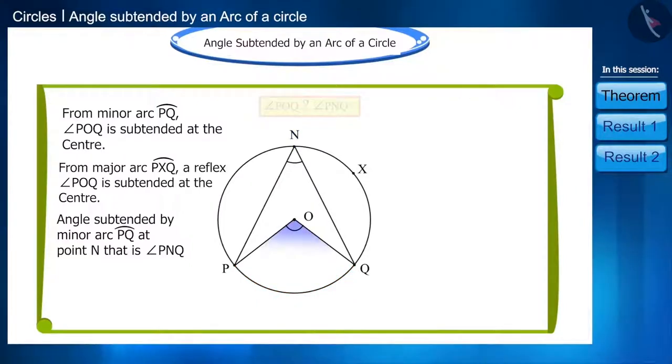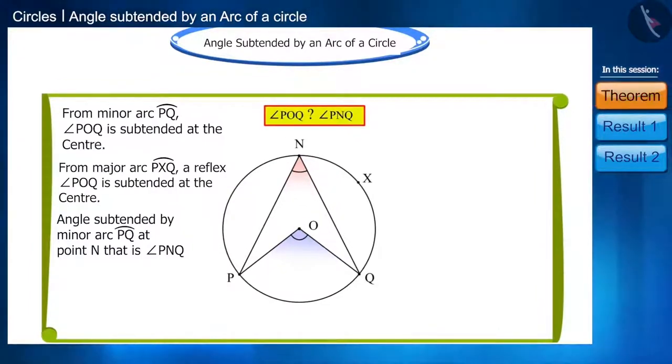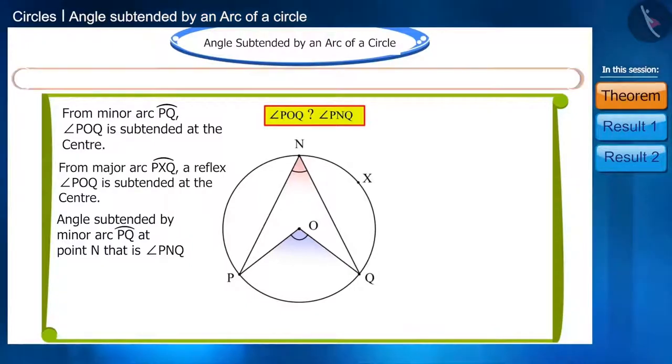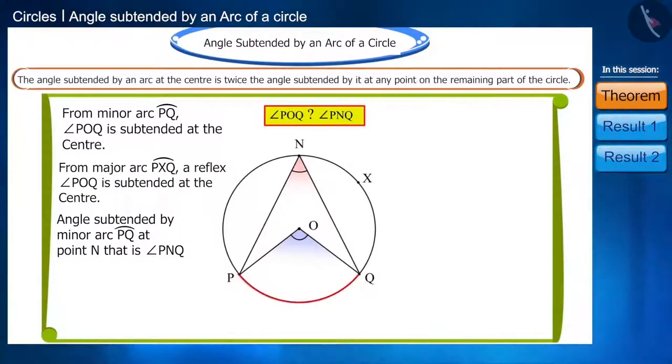Will there be a relation between angle POQ and angle PNQ? There is a theorem related to this question, which says: the angle subtended by an arc at the center is twice the angle subtended by it at any point on the remaining part of the circle.